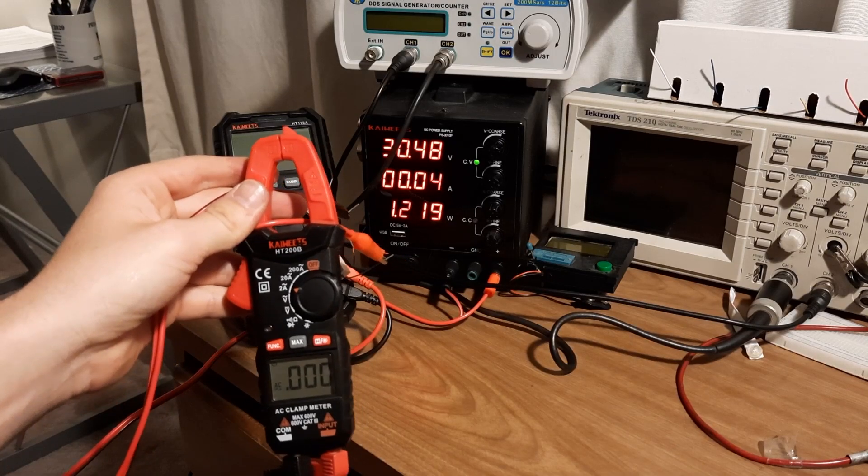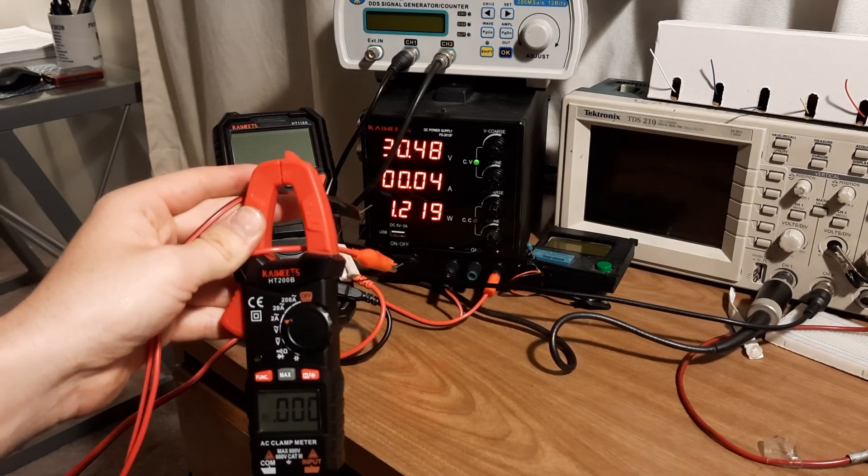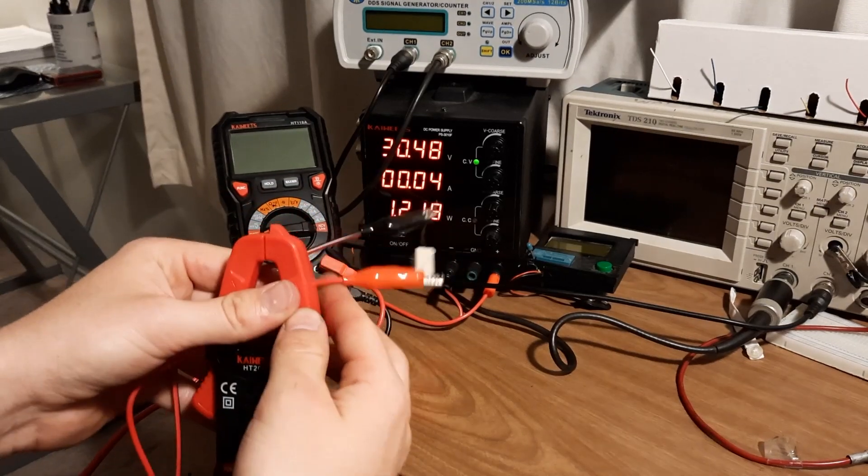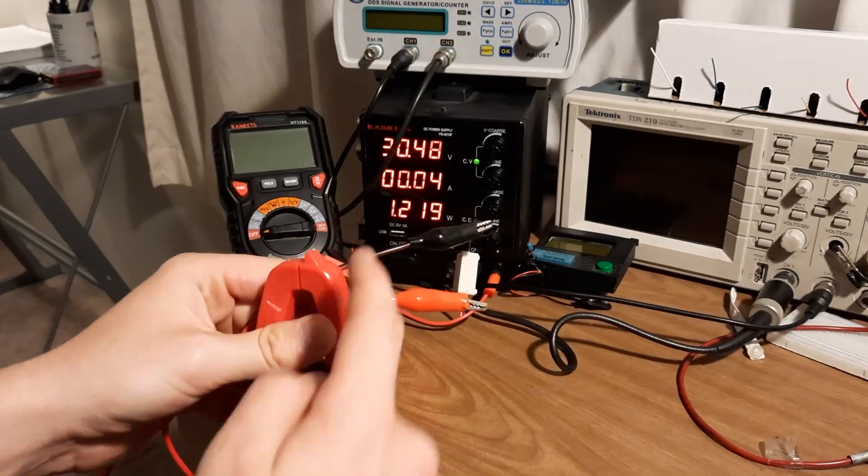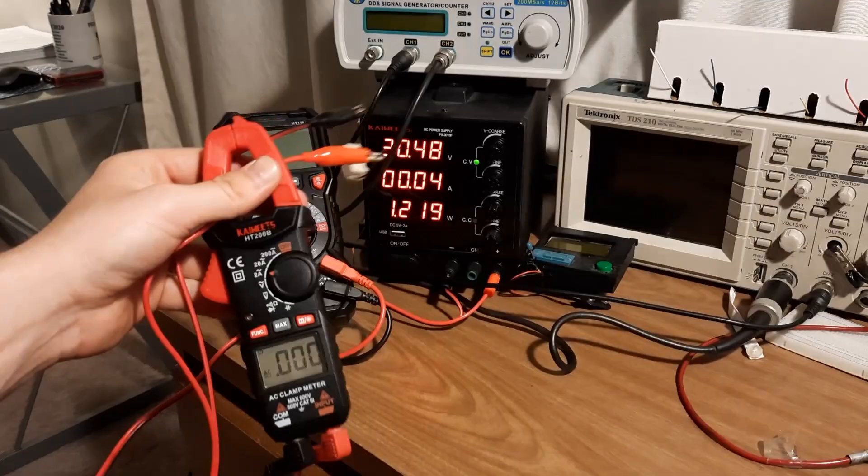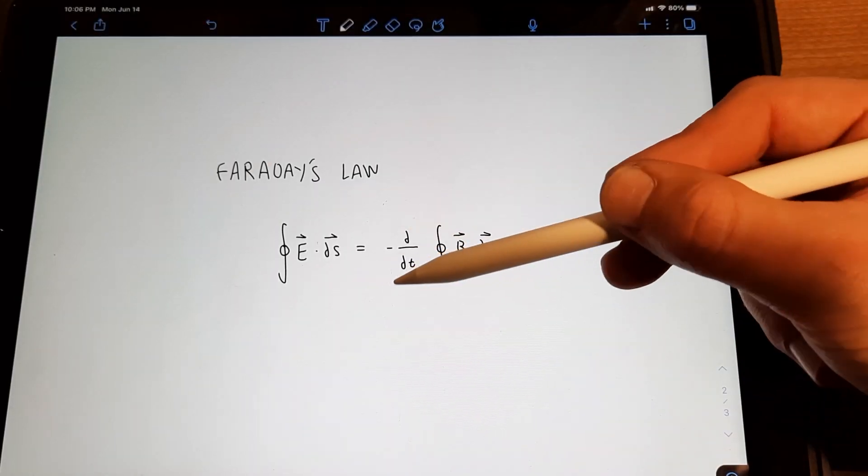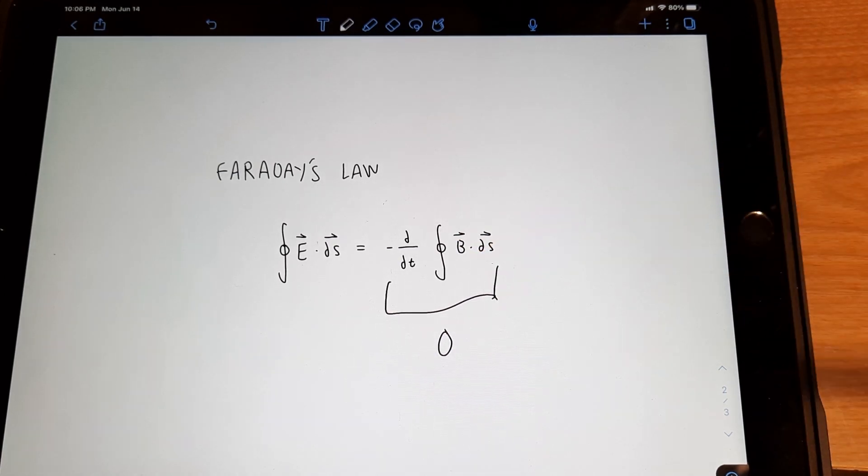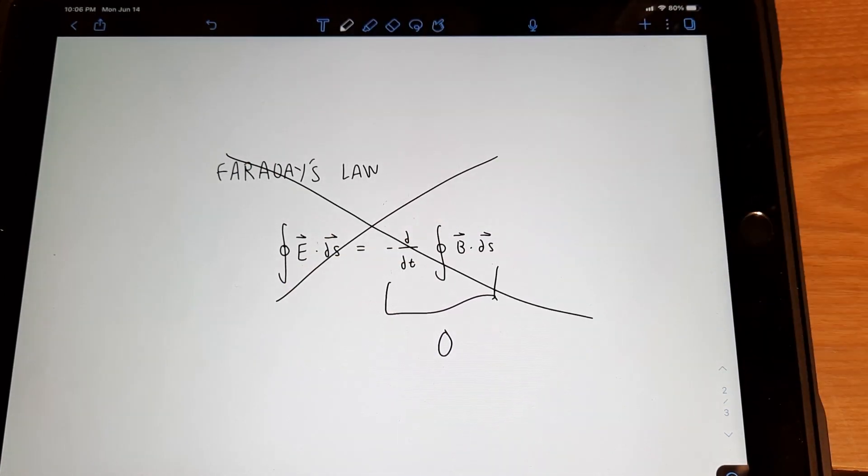This method of measuring current with a clamp meter works all fine and good when you're using a changing magnetic field that comes along with AC current. But how about DC current? Where the magnetic field around this wire stays constant and doesn't change? We can't use Faraday's law because this whole side of the equation just becomes zero, because that magnetic field is not changing. So that rules out the possibility of using that.